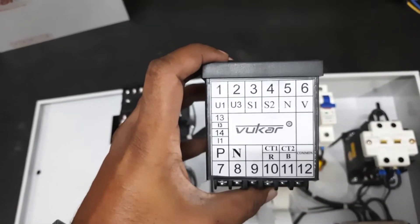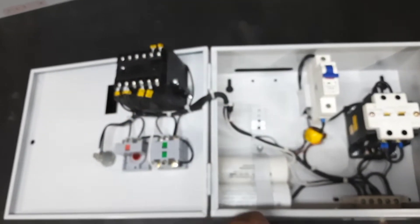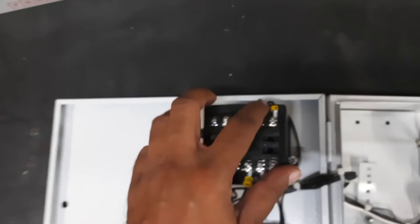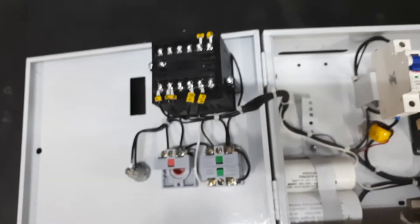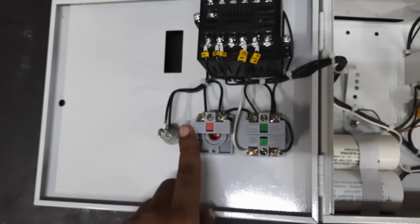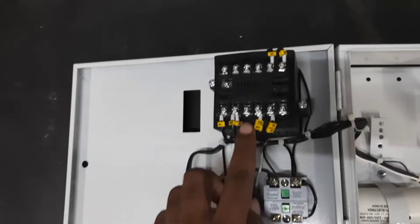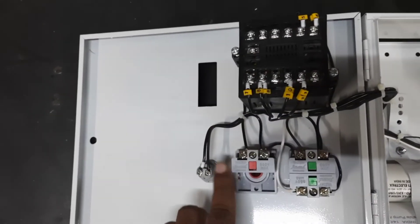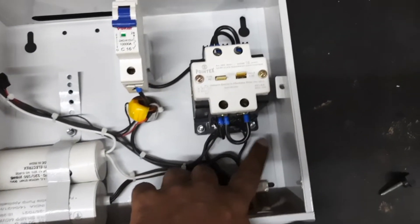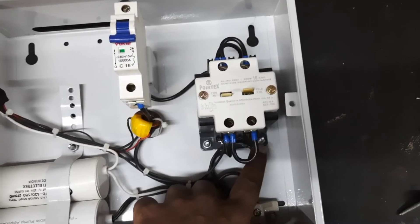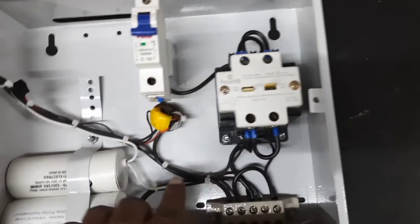Terminals five and six, that is N and V terminal. These will be connected with the off push button and contactor coil. Terminal five is connected with the off push button, and terminal six is connected with the contactor coil. The second terminal of the contactor coil will be directly provided with the neutral.